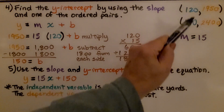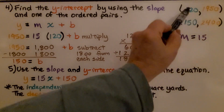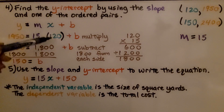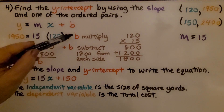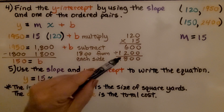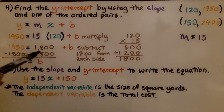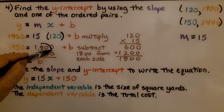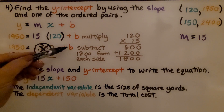We have our ordered pairs and our slope, and we find the y-intercept using the slope and one of the ordered pairs. We use 1,950 for y and 120 for x in the slope-intercept form, substituting 15 for m, plus b. We multiply 15 times 120 and get 1,800. We subtract 1,800 from both sides, creating a zero pair, and we get 150 = b.